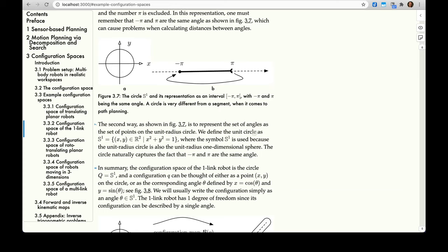We define the unit circle as S^1, the set in the plane of points (x,y) at which x^2 + y^2 = 1. The symbol S^1 is used because the unit radius circle is also the unit radius one-dimensional sphere. We typically think of sphere as being three-dimensional, but this is what's called the one-dimensional sphere. The circle naturally captures the fact that negative pi and pi are the same angle. If you start at negative pi on the unit circle and you increase from negative pi to negative pi/2 to zero to pi/2 to pi, it's easy to see here that it's actually the same angle. That's why we like this. It's able to capture the fact that we've gone around in a circle completely.